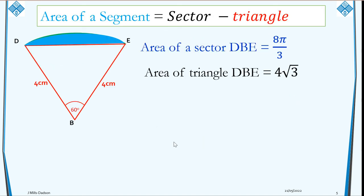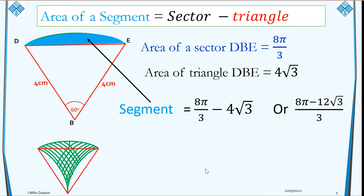Now we can proceed to work out the segment. The segment, which is the blue part, is equal to a full sector minus the triangle. Our sector is 8π/3. So the segment equals 8π/3 minus the triangle 4√3, which is the same as (8π - 12√3)/3. These two are the same values.